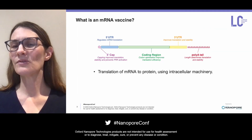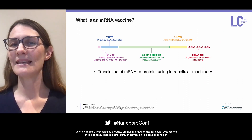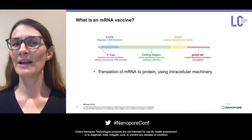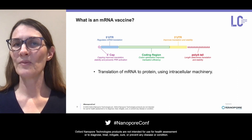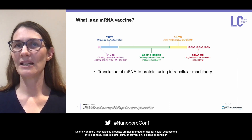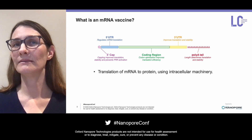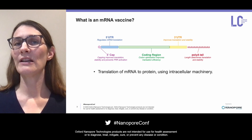So what is the structure of a synthetic mRNA? It's composed of a 5' cap, 3' and 5' untranslated regions, a hard-coded poly-A tail, and a coding region.